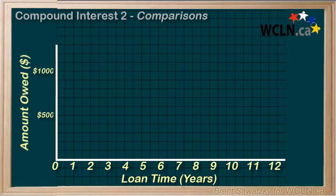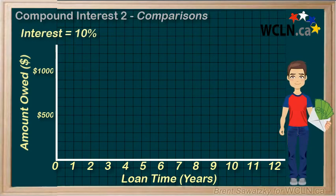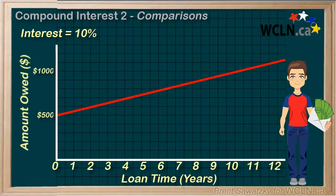So how much does compounding actually impact the amount owed? Well, let's take a look at a graph to better visualize this. Here's our situation where Jerry has borrowed $500 from Linda. If he's paying simple interest for renting Linda's money, the graph would look like this. It's linear — simply $50 extra dollars in interest being added to the amount owed each year.